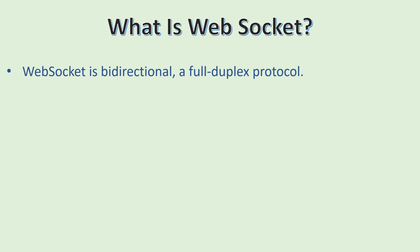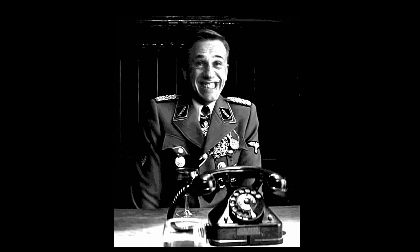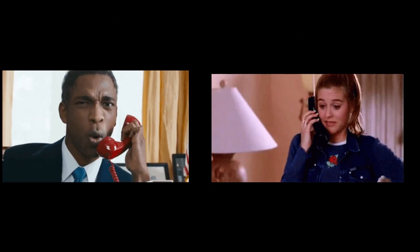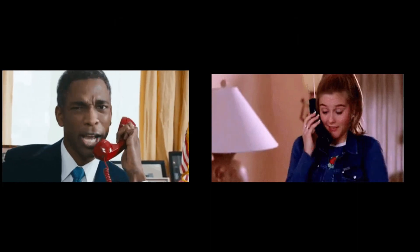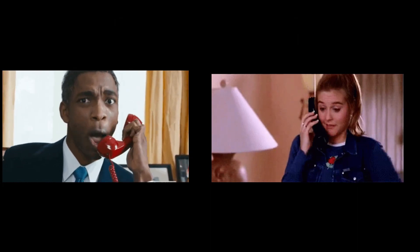The first thing about WebSocket is that it is a bi-directional and full duplex protocol. Let me explain this with the help of a telephone. In a telephone, two people can talk to each other — the communication between them is bi-directional.